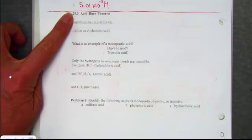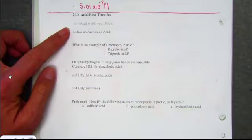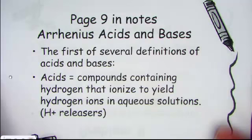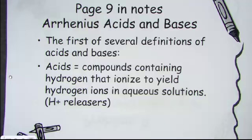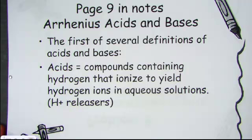The first of the three theories being discussed is the Arrhenius. Let's define an Arrhenius acid. Arrhenius defined acids to be those compounds containing hydrogen that ionize to yield hydrogen ions in aqueous solutions. Acids ionize in aqueous solutions to form hydrogen ions. You'll need to write that in your note pack.